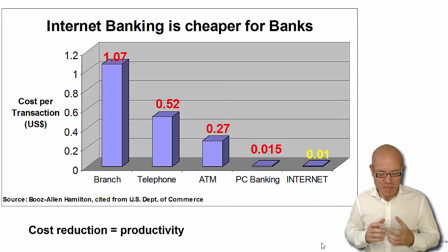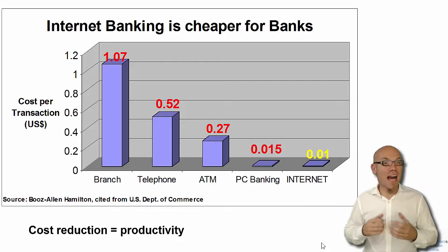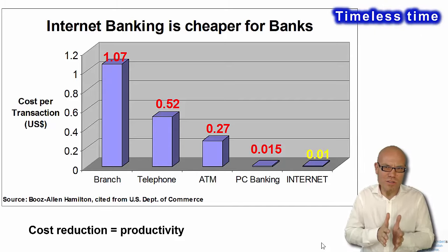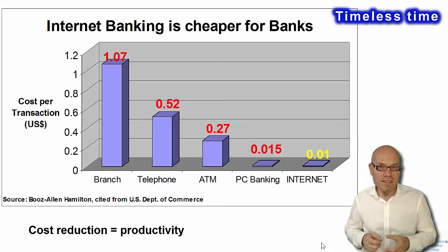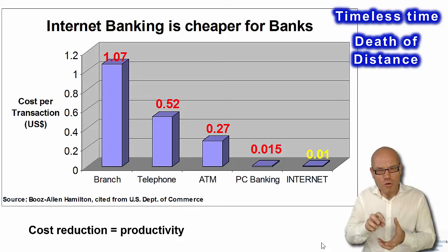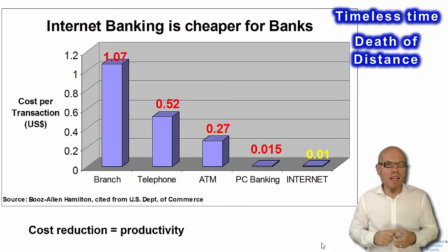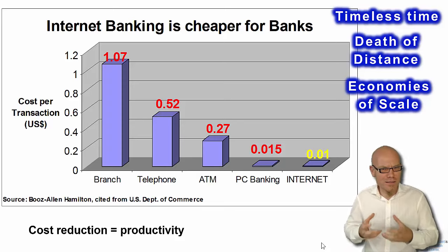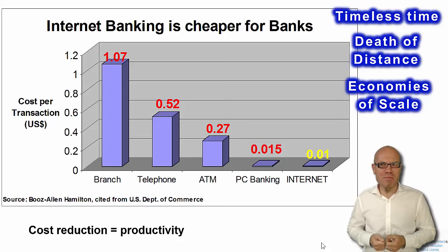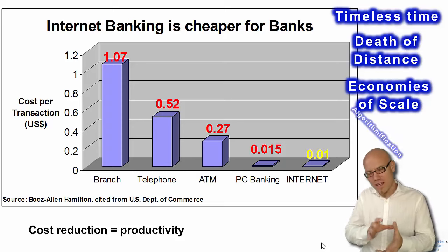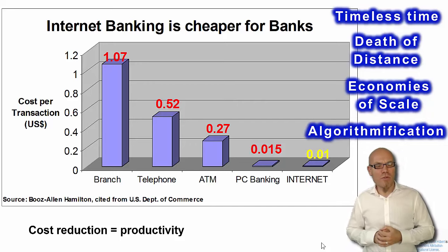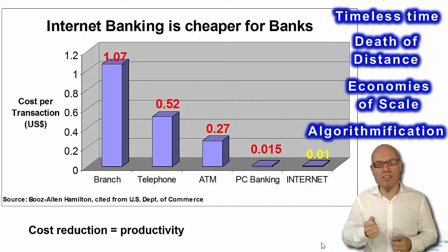Why are the transaction costs so reduced? Well, there are several characteristics involved. Timeless time, for example — you can negate sequence. It's not necessary to have strict hours from 8 in the morning to 2 in the afternoon and pay somebody to be there. The death of distance: it doesn't really matter where you are. The bank doesn't need to have so many different locations. Economies of scale: the bank only has to develop the online banking software once and give it to all its different branches. It doesn't have to retrain the algorithm that substitutes the banking clerk. And algorithmification as well — instead of having a person executing this rule, this procedure, this recipe, algorithms do it for us.